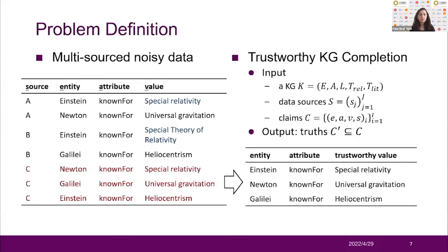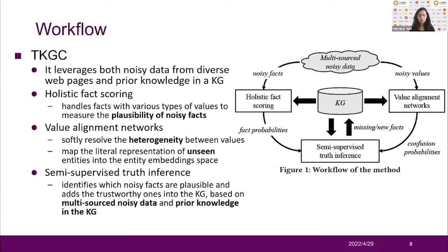Our approach is called TKGC. TKGC is designed to solve the so-called trustworthy KG compilation problem. Formally, this problem takes the KG, a set of data sources and a set of noisy facts called claims as input, and finds out correct claims called truths as the output. The workflow of TKGC takes multi-source noisy data as input. The first component, holistic fact scoring, judges the plausibility of noisy facts. The value alignment network softly resolves the heterogeneity between values and maps the literal representation of an entity into the entity embedding space. The third component, semi-supervised truth inference, takes the input of holistic fact scoring and the value alignment networks, identifies which noisy facts are plausible, and adds trustworthy facts into the KG based on multi-source noisy data and prior knowledge.